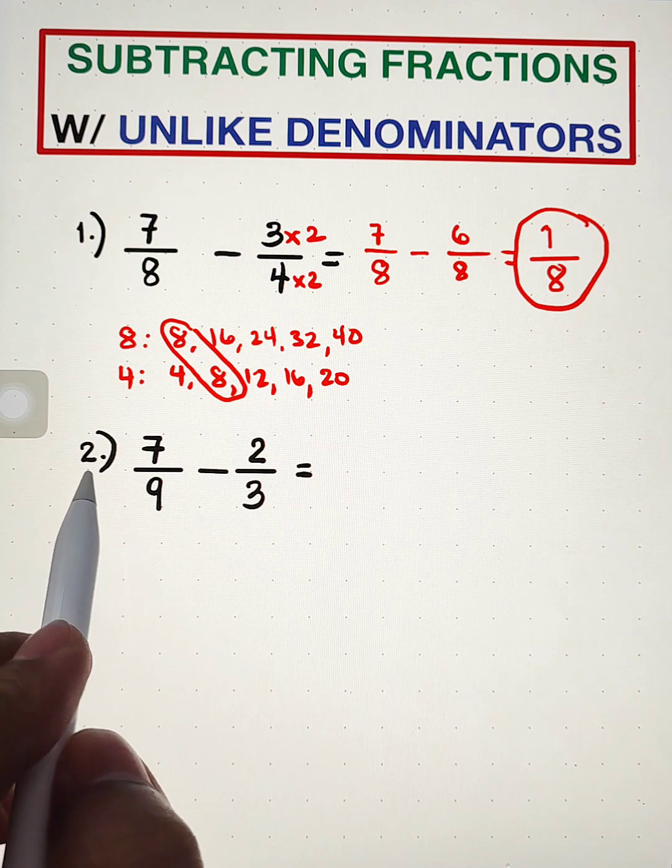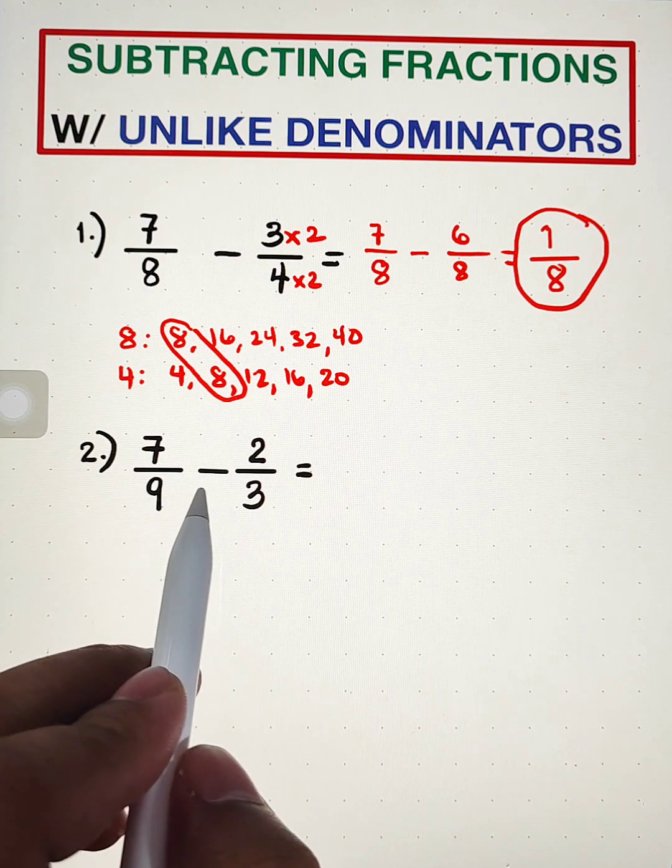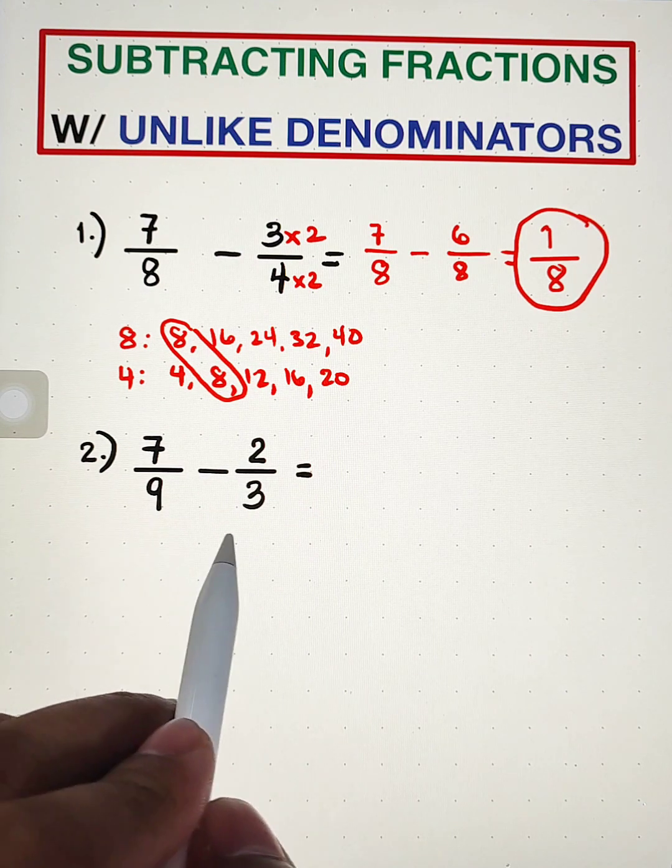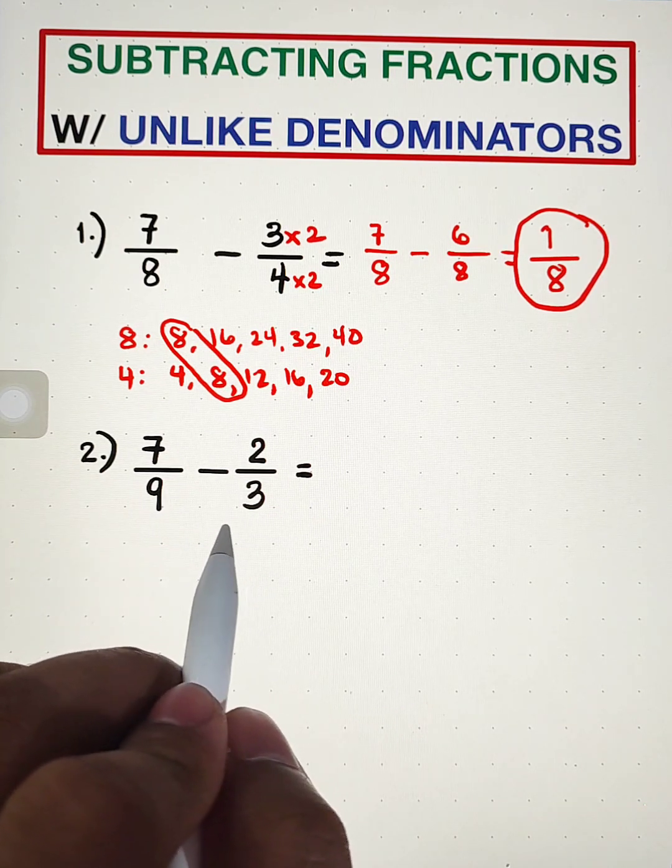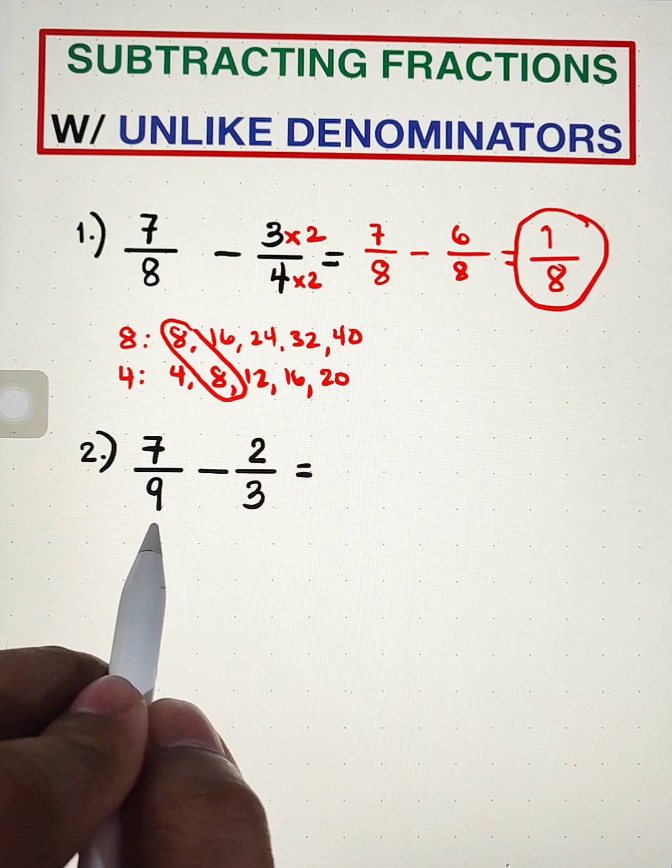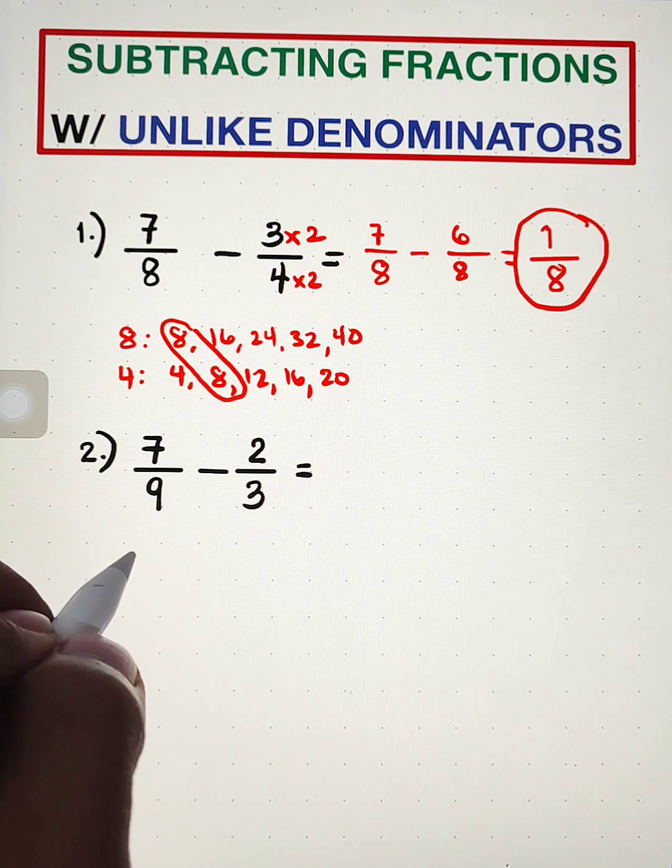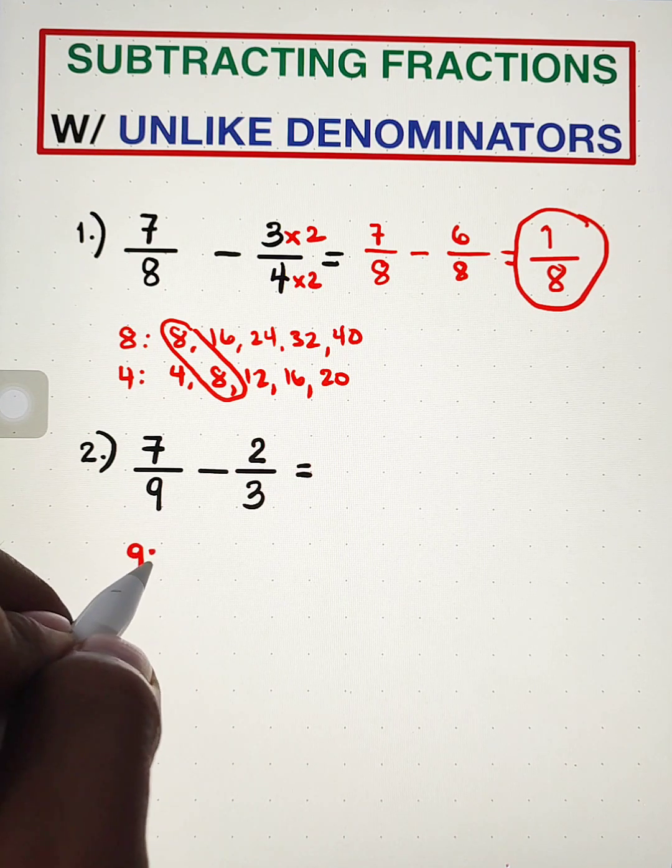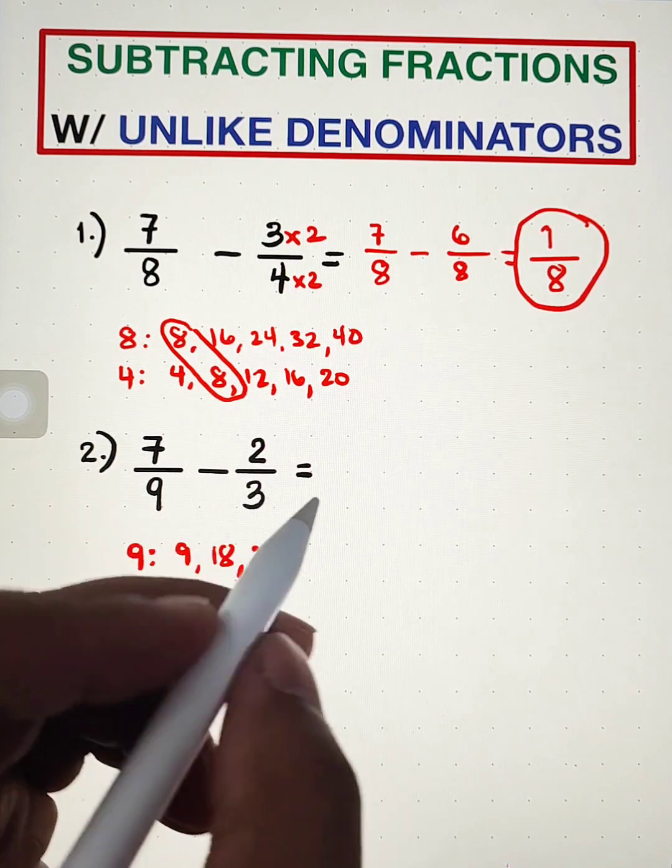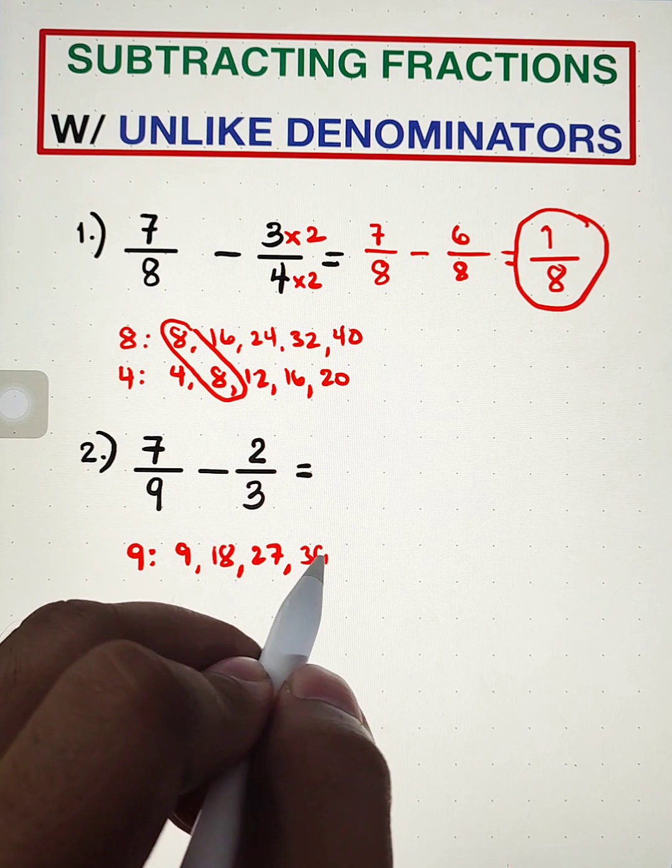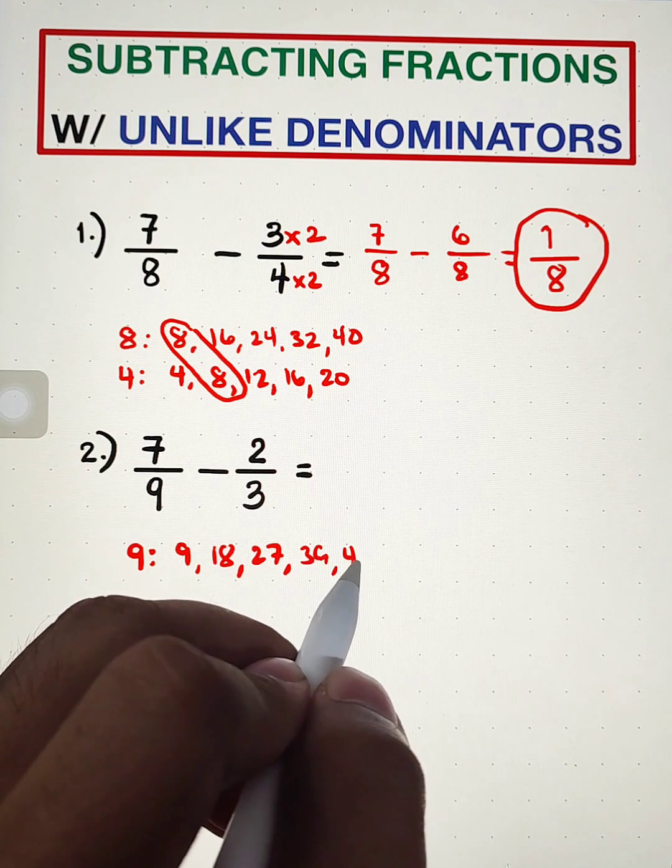Next, we have 7 over 9 minus 2 over 3. As you can see, our denominators are different. So we need to find the LCM of 9 and 3. So we have here 9. The multiples are 9, 18, 27, 36, 45.